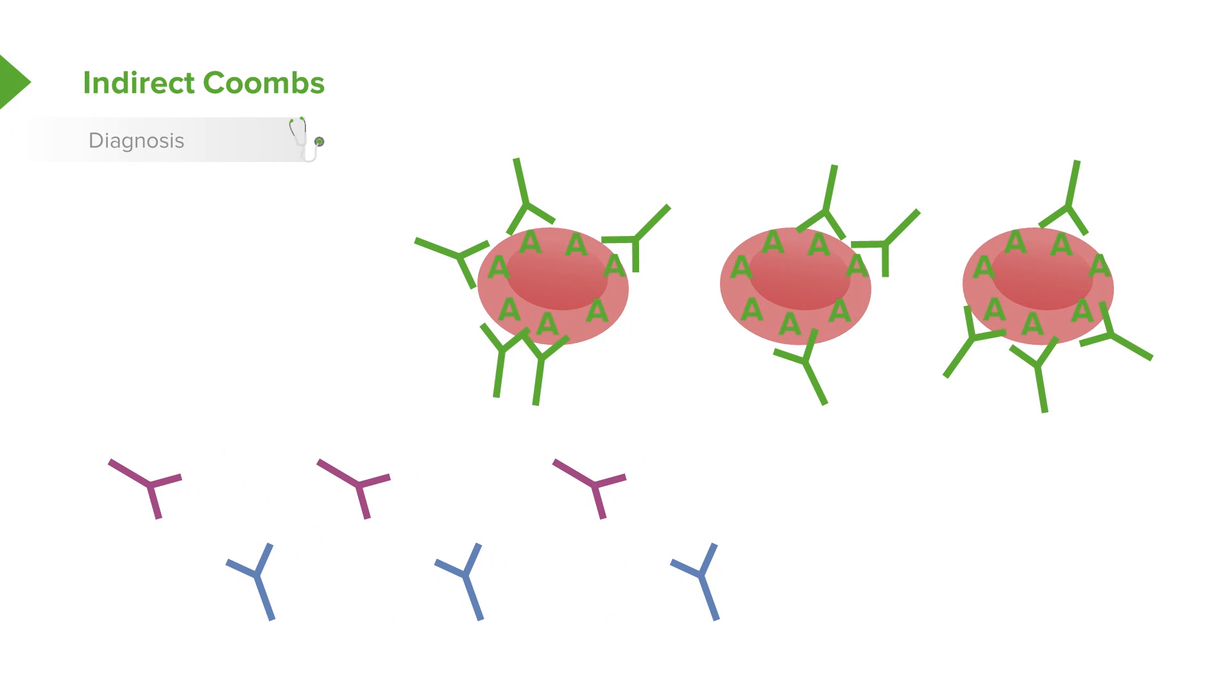Guess what will happen? All those A antibodies are going to go up and bind to that volunteer's blood. Now we'll put in some B cells and the Bs will go and attack to the blood. In fact, whatever the protein, it will attack to the blood.